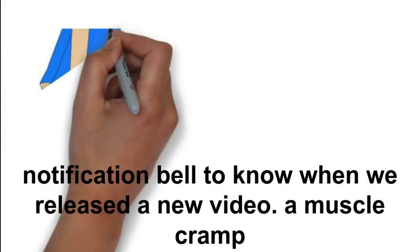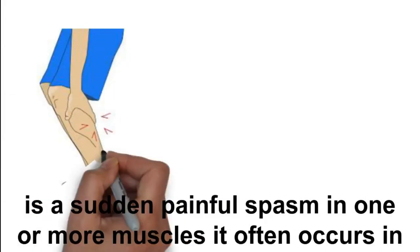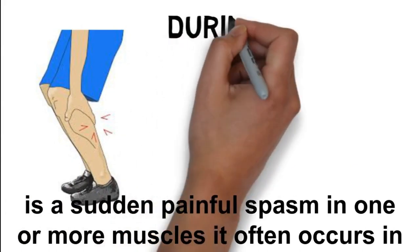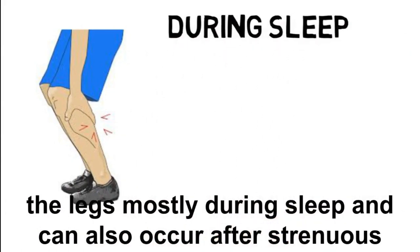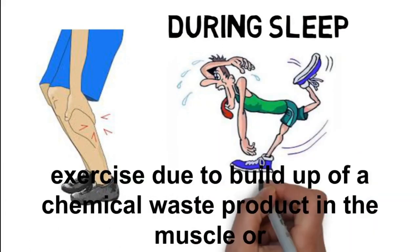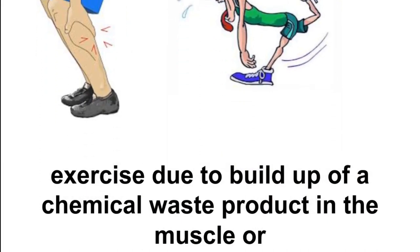A muscle cramp is a sudden painful spasm in one or more muscles. It often occurs in the legs, mostly during sleep, and can also occur after strenuous exercise.